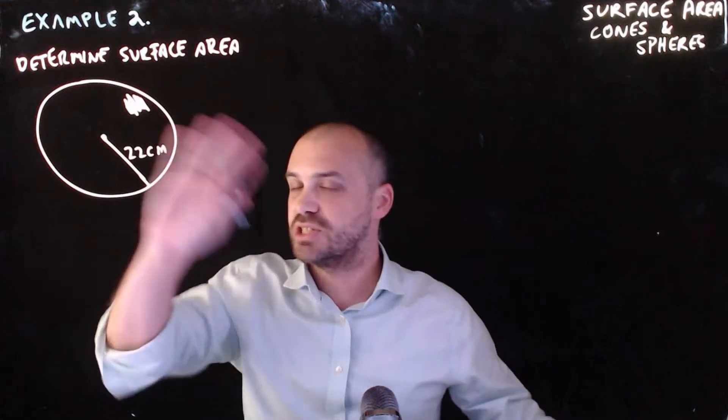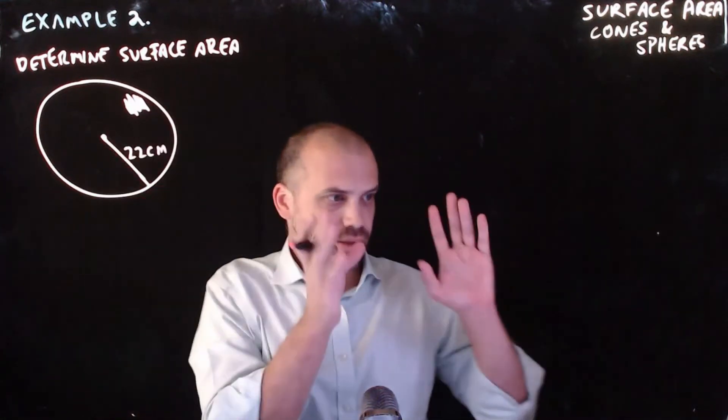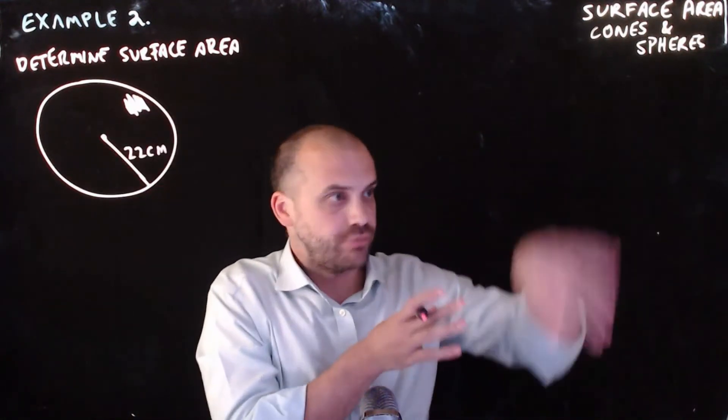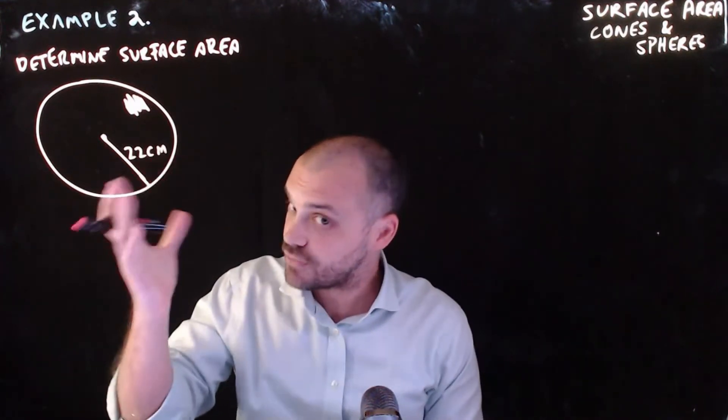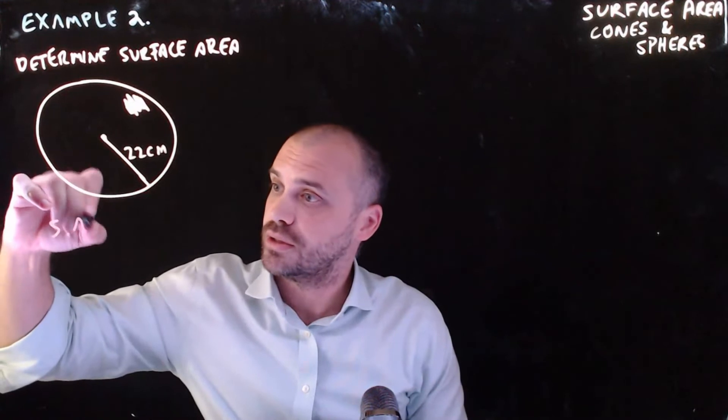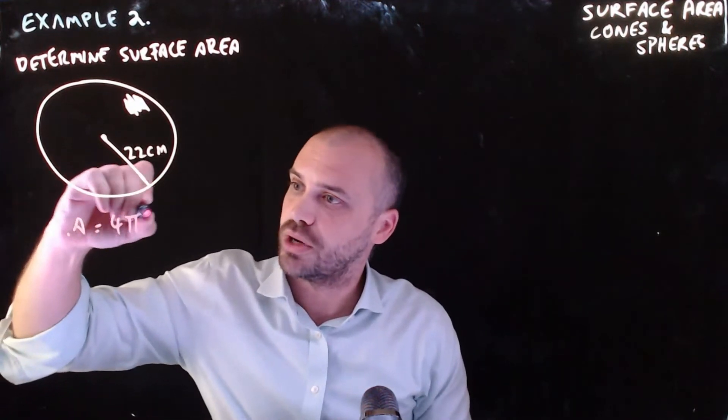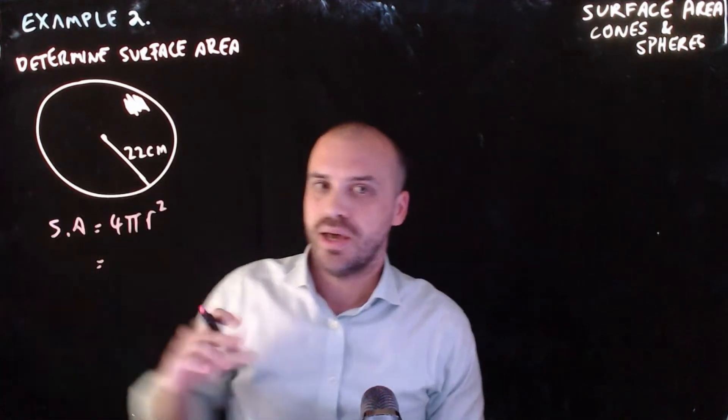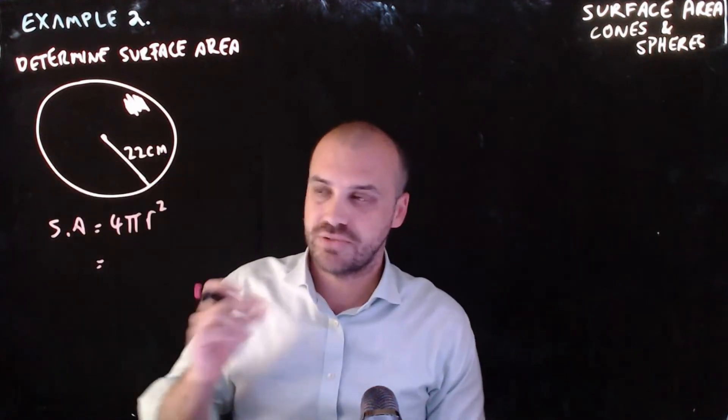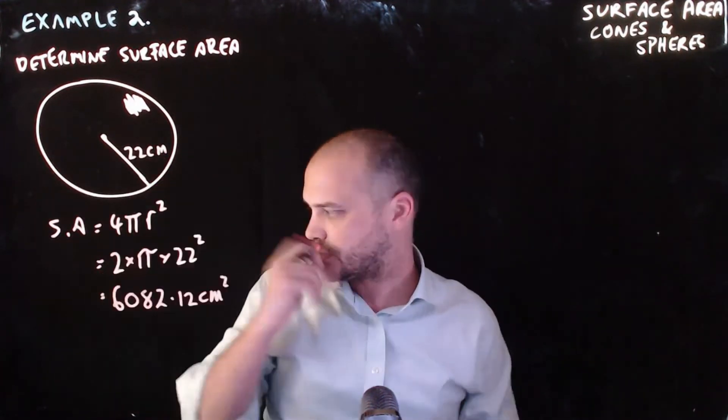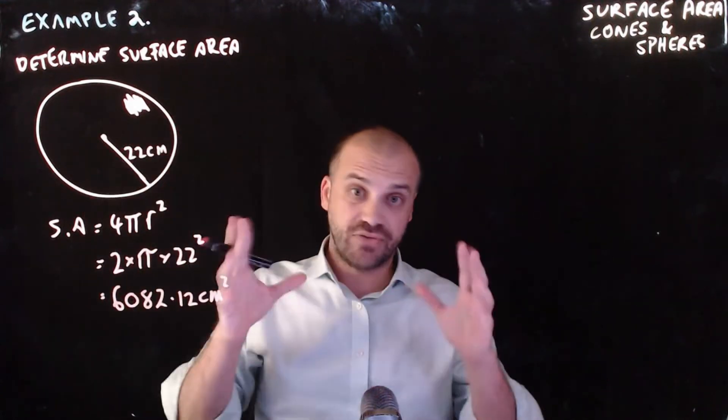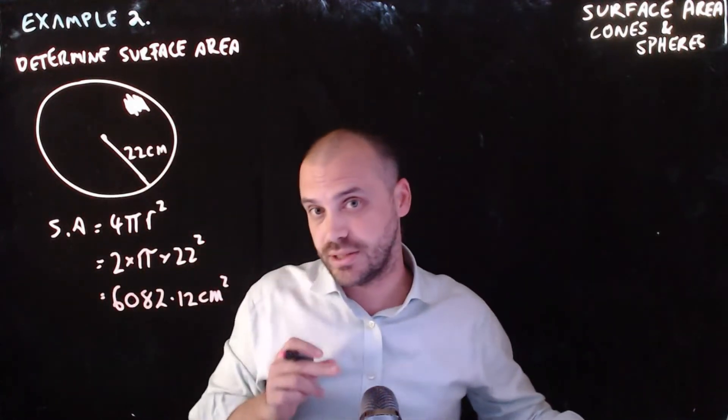So example 2 here, it's a sphere, it couldn't be easier. Now, I got excited, I deleted it, I rubbed out all of my other stuff, but we know that the surface area of a sphere is equal to 4πr squared. And the radius of this particular sphere is 22, so we just put in our numbers, get an answer. Okay, so that's the surface area of a sphere, could not be easier.